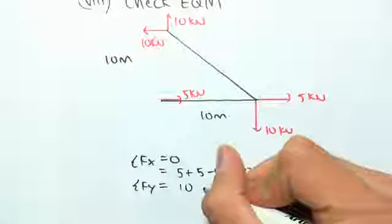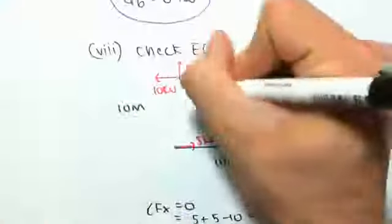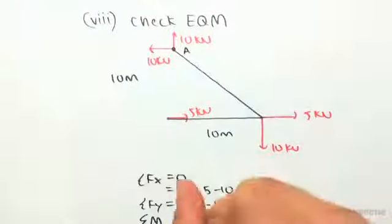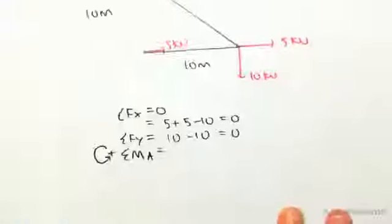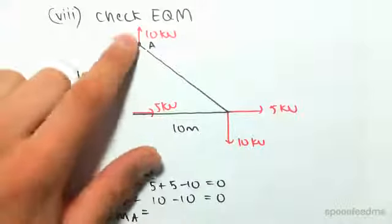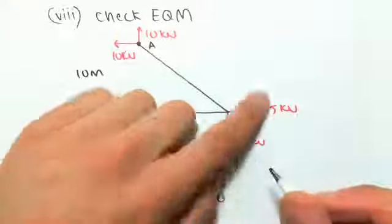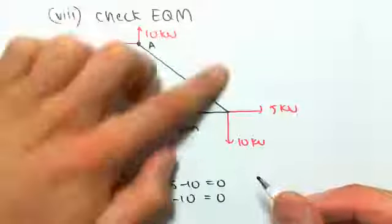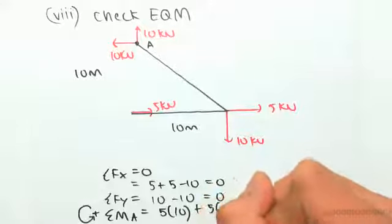And now we're going to check moments, and we're going to check it about that point A. So moments about A, taking anti-clockwise as positive. There's no lever arm for those, so we don't have to worry about them. This 5 and this 5 are both 10 meters away and they're going anti-clockwise, so it's going to be 5 times 10 plus 5 times 10.